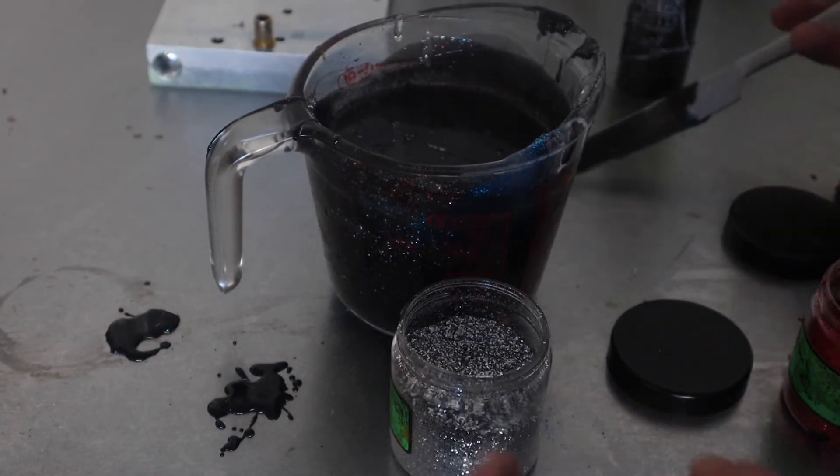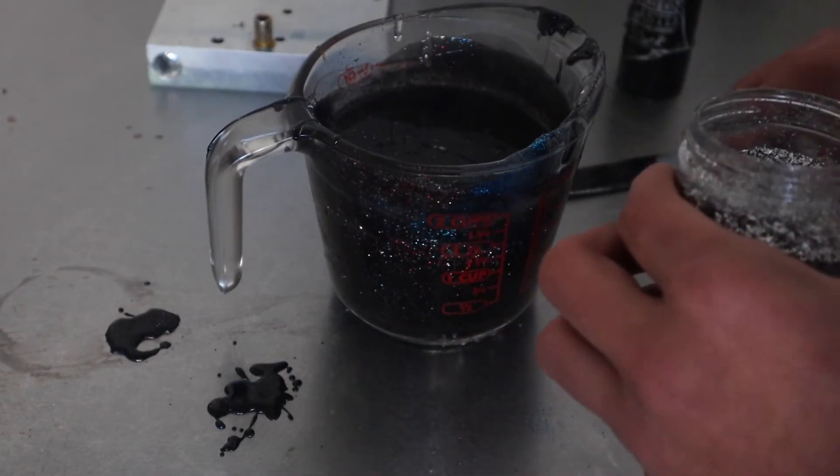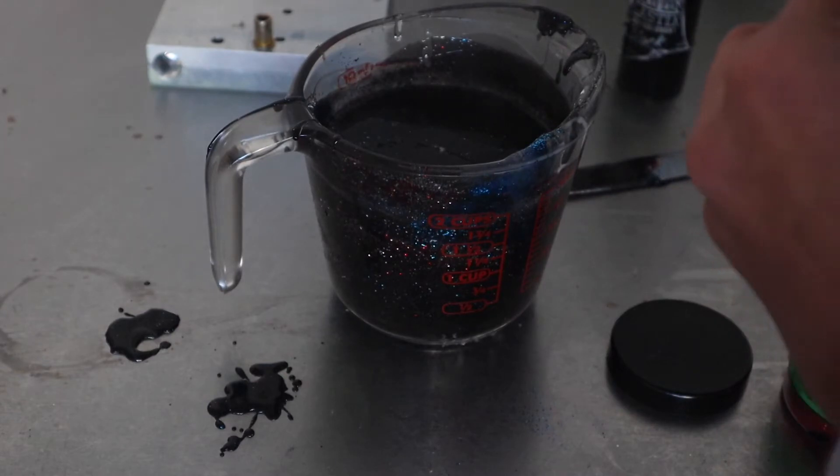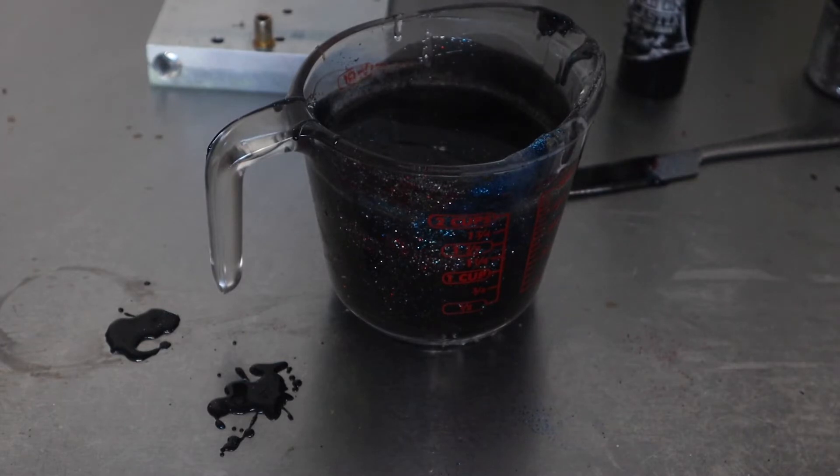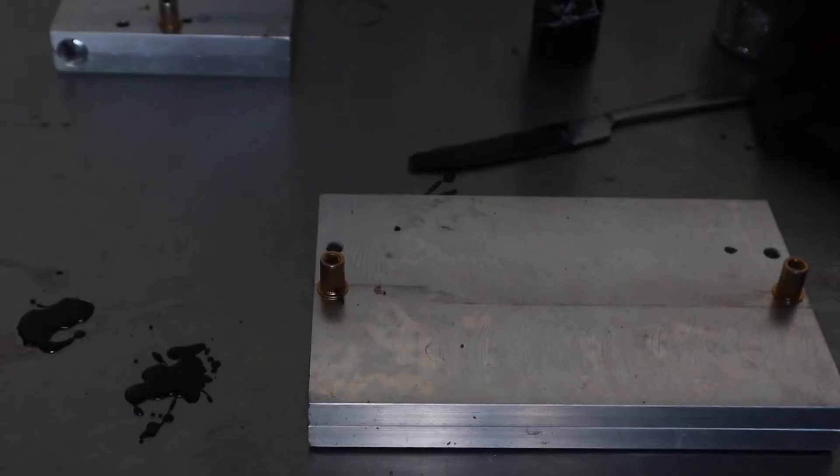So now what I'm going to do is I'm going to run this plastic through what's called a vacuum chamber. That sucks out all the air and moisture out of the plastic so we don't have any problems when we shoot. And then I'm going to heat it back up and then we will shoot the plastic into the mold and we'll see how they turn out. All right, so I'm gonna put this in the vacuum chamber now.